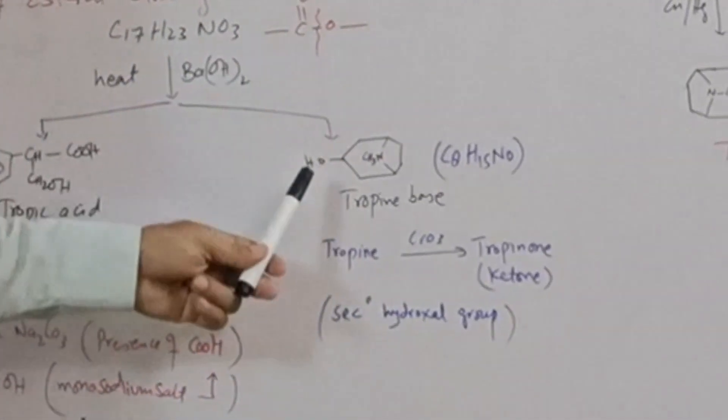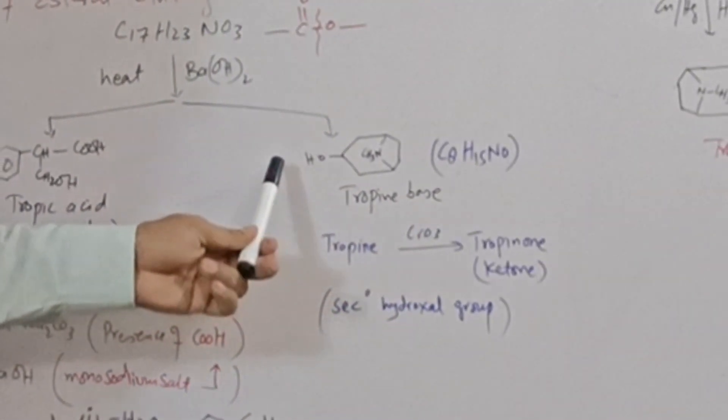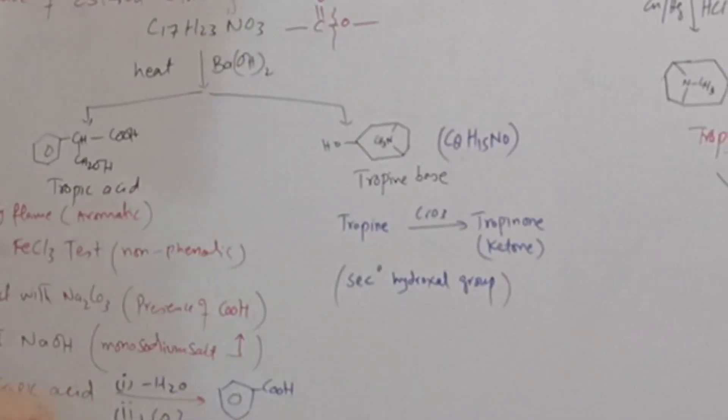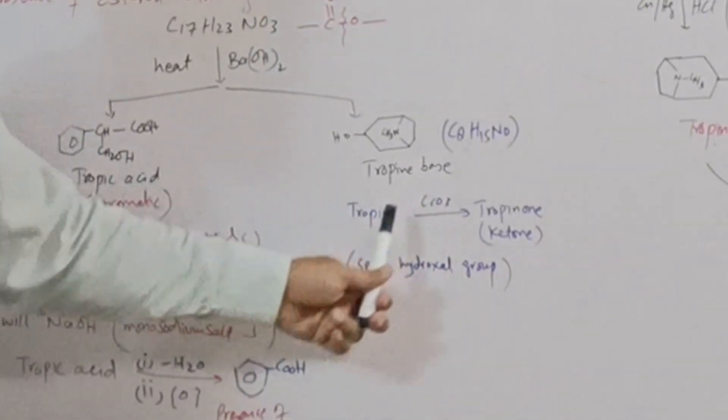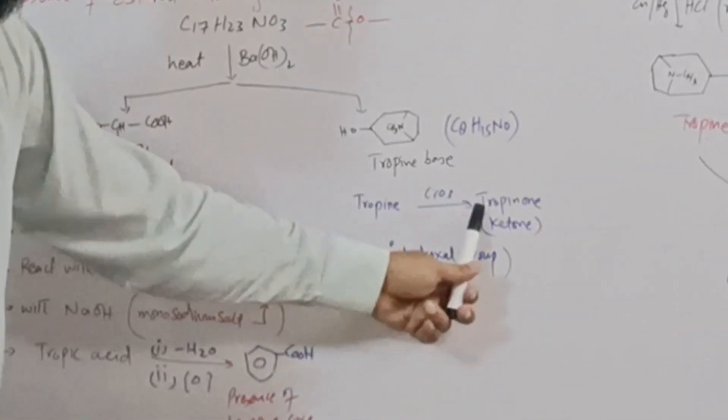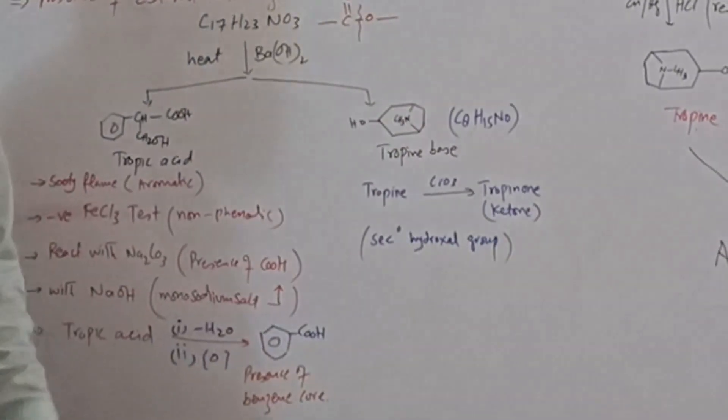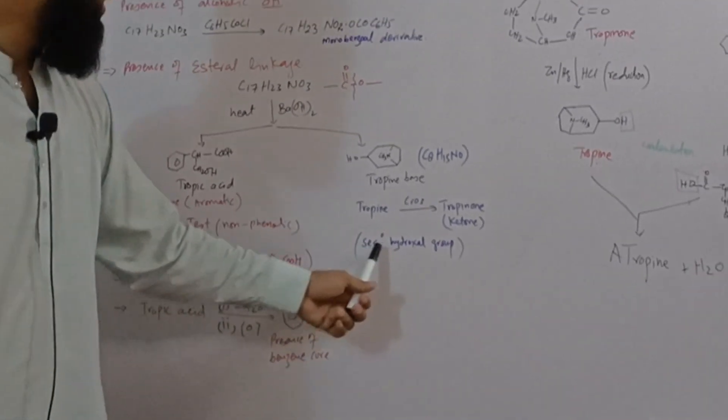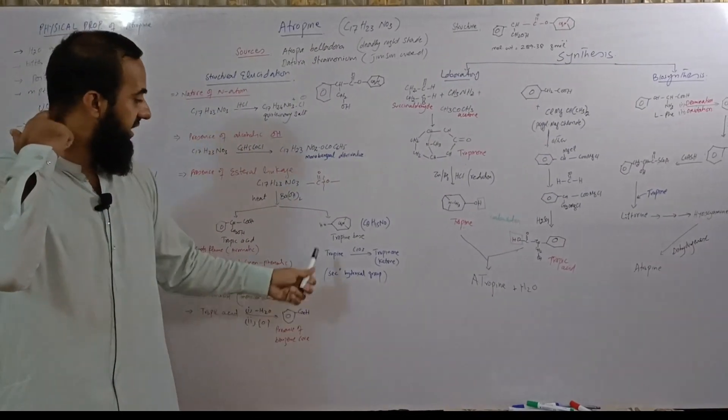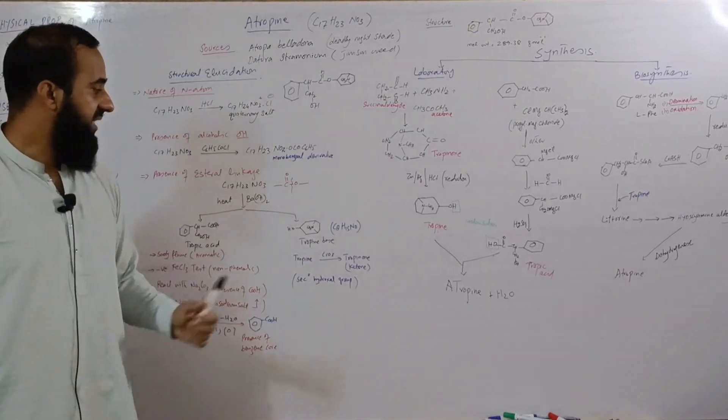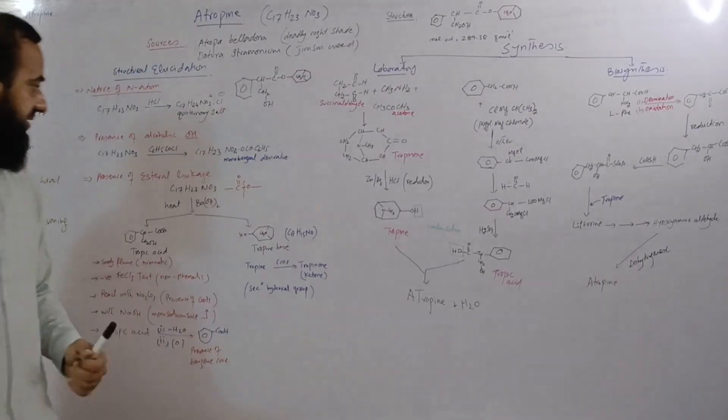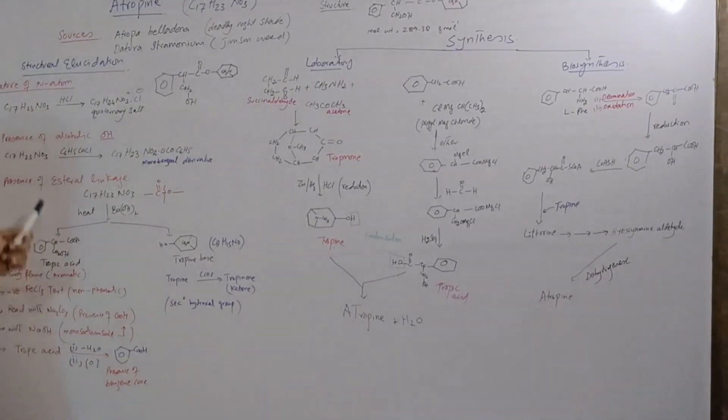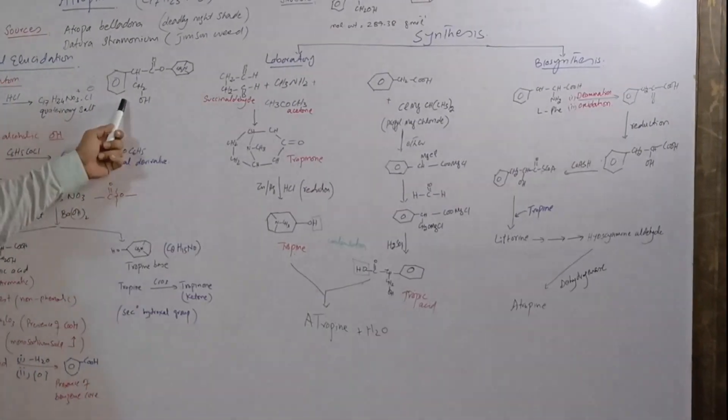After hydrolysis we get the base which contains hydroxyl. Whether the hydroxyl is present as a primary alcohol or secondary? Tropine base undergoes oxidation and we get tropenone ketone. We know that secondary alcohols oxidize to give ketones. Hence proved that secondary hydroxyl or secondary alcoholic hydroxyl group is present in tropine base. All these elucidated data are evidences that show atropine has this structure.